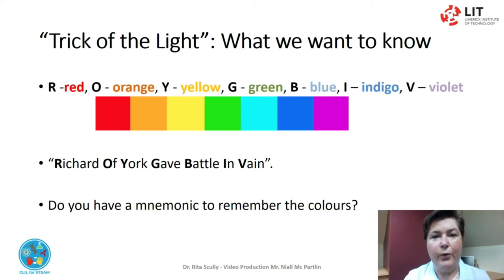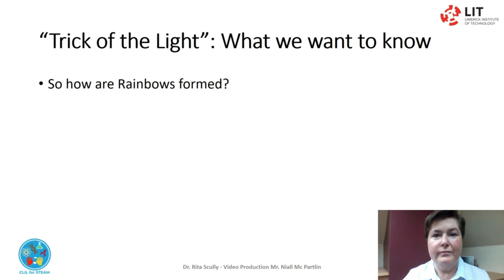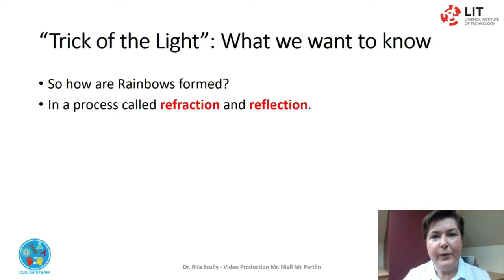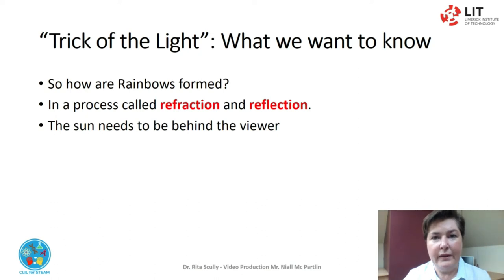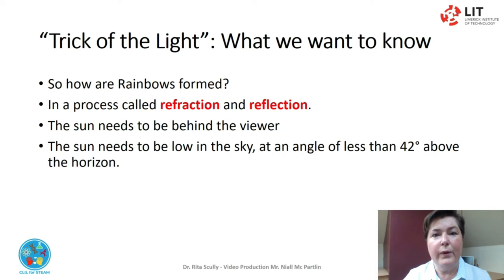Rainbows can be caused by various forms of airborne water. They include not only rain but mist, spray and airborne dew. This is why they can be observed in a number of different locations. Because water is denser than air, light passing from air to a raindrop at an angle slows and changes direction — this process is called refraction and reflection. The sun needs to be behind the viewer, low in the sky, at an angle of less than 42 degrees above the horizon. The lower the sun is, the higher the rainbow will appear.